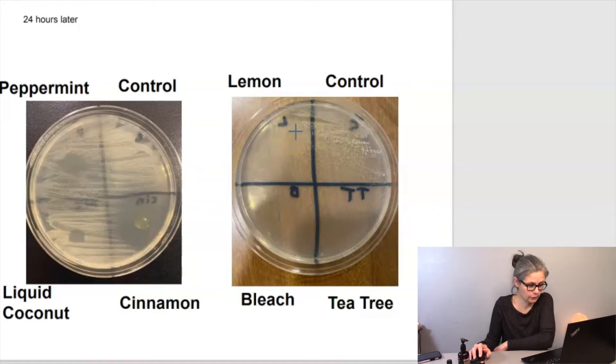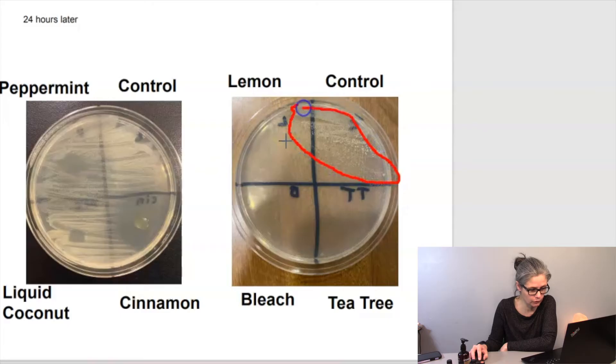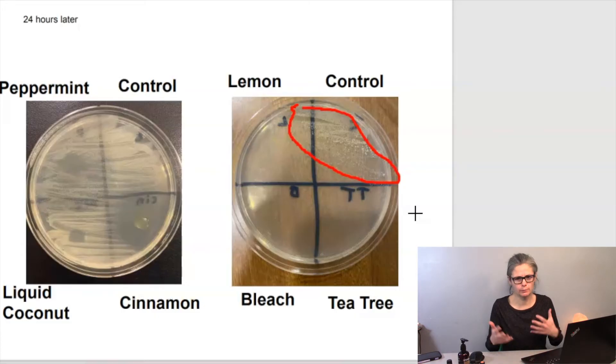Then I look at the next dish where I had the lemon, the tea tree, and the bleach. And again, I'm seeing this weird thing where there's just a little bit of growth around the control and then nothing in lemon, nothing in bleach, and nothing in tea tree. So I decided to do a separate dish for lemon and tea tree just to give it another try to see if it's really inhibiting the growth or if I had a problem with my swabbing.